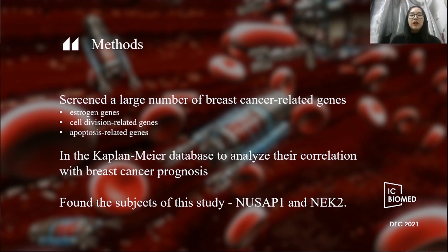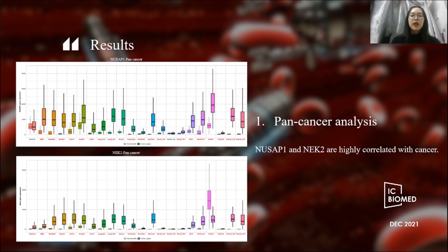We first screened a large number of breast cancer-related genes, such as estrogen genes, cell division-related genes, apoptosis-related genes, etc. In the Kaplan-Meier database, to analyze their correlation with breast cancer prognosis, and found the subjects of this study: NASAP1 and NASAP2.